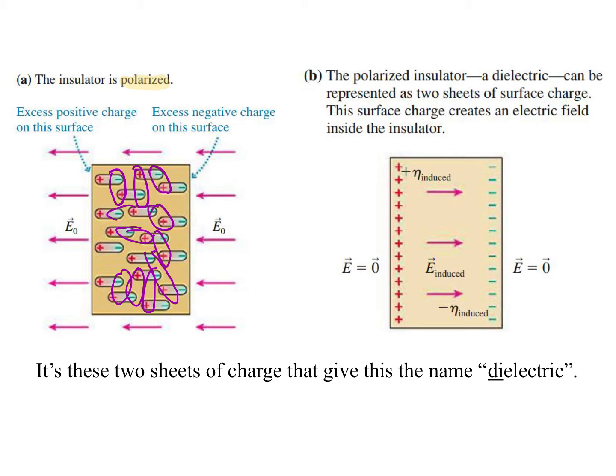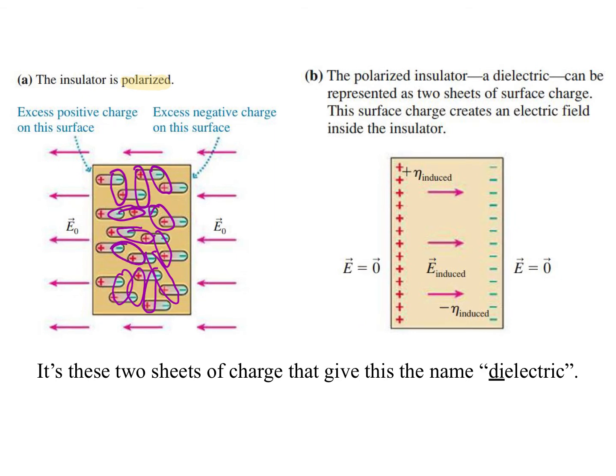And so what we can end up doing is seeing that when we've done all of that, it is as if we get a sheet of positive charge at one end, and a sheet of negative charge at the other end because the guys in the middle have all bonded in different ways so as to cancel each other. But the ones on the end can't because they're too far away from each other.